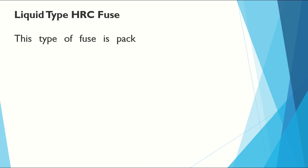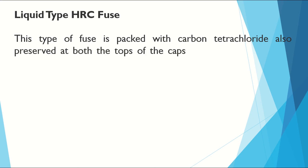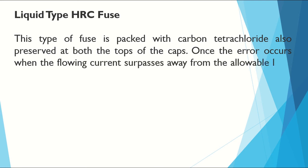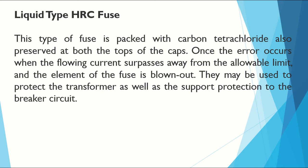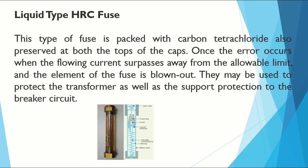Liquid type HRC fuse — this is also a high voltage fuse. This type of fuse is packed with carbon tetrachloride and preserved at both end caps. When an error occurs and the flowing current surpasses the allowable limit, the fuse element is blown out. They may be used to protect transformers as well as provide backup protection to breaker circuits.